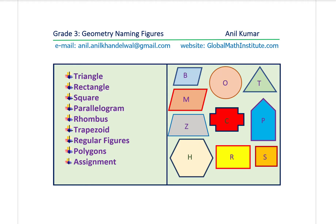I am Anil Kumar, welcome to my series for grade 3 students. In this video we will learn how to name figures. We have ten different figures here, and we will see how to name them. The common names we are going to look into are: triangle, rectangle, square, parallelogram, rhombus, trapezoid, regular figures, and polygons. Then we'll have an assignment for you all.